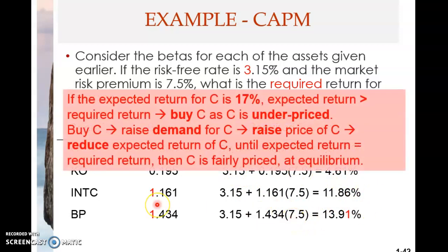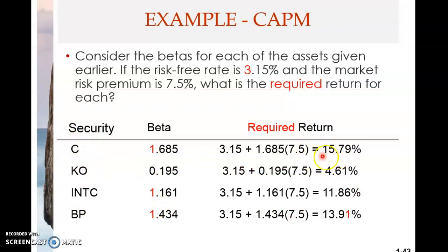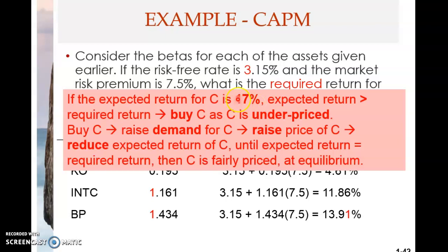Looking at stock C, its required return is about 15.8%. But what if the expected return for C is 17%? That is higher than the required return. When there is a difference between expected return and required return, there is no equilibrium — the stock is not fairly priced. Since the required return is lower than the expected return, many investors will go and buy it, as they require less than 16% but receive 17%.